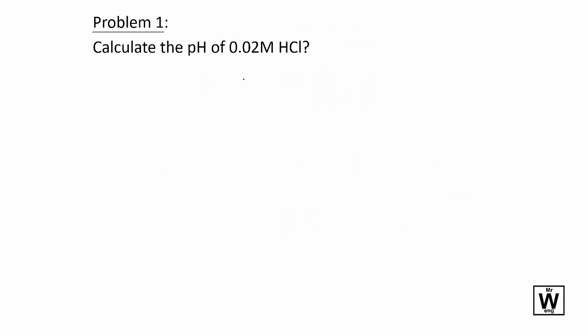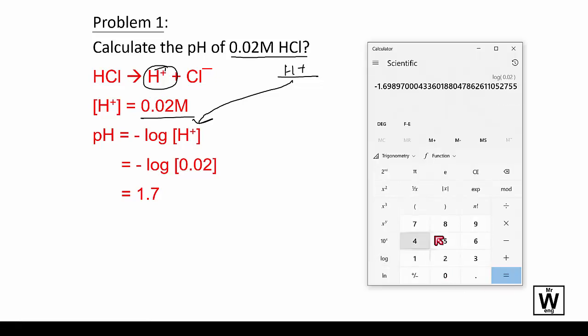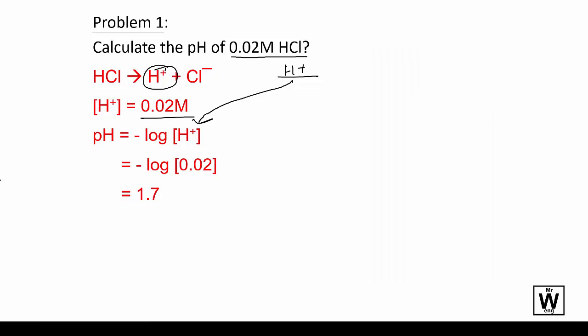Calculate the pH of 0.02 molar concentration HCl. To do this one, you need to realize that just breaks off into one ion, so that means that the hydrogen ion concentration is also 0.02 molar. So basically just sub the number in. I'll do that on the calculator. So 0.02 and log, and that's minus 1.69, and because we get rid of the negative, we just leave it as 1.69 rounding off to 1.7. Hopefully you'll find that easy.